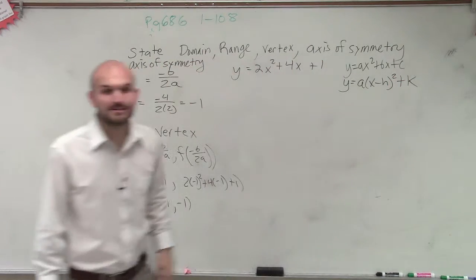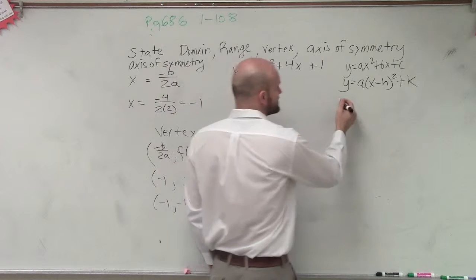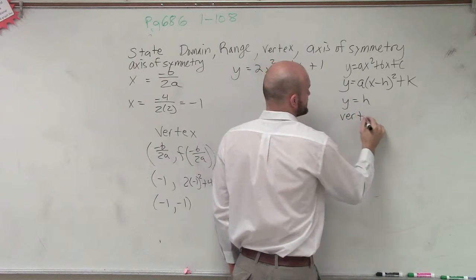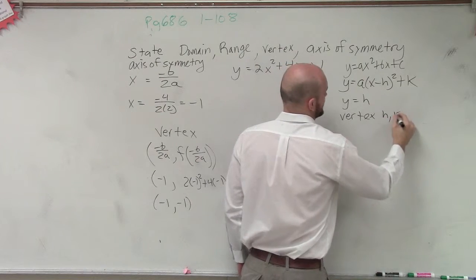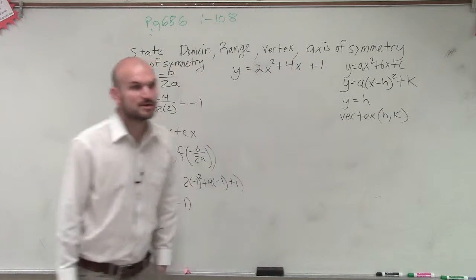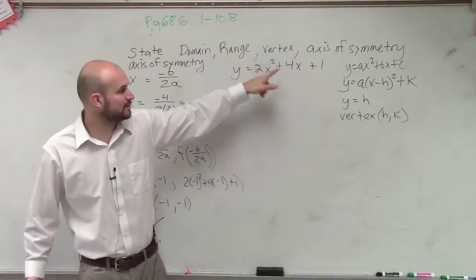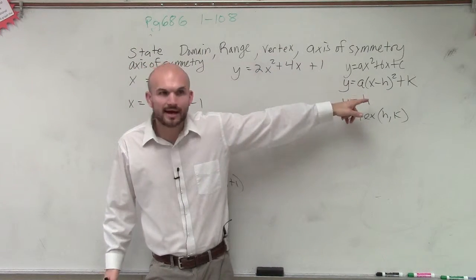if we have an equation written in this format, finding the axis of symmetry and vertex is very easy, because we know the axis of symmetry is just x equals h, and the vertex is h comma k. So then we can say, can we rewrite this in that format?